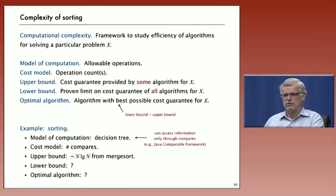So, for sorting, let's look at what each of these are. The model of computation is what's called a decision tree. What that means is that all we can use is compares. That's the only way we can access the data. So, our cost model is the number of compares.